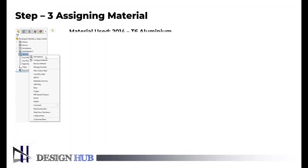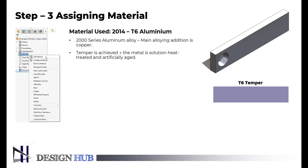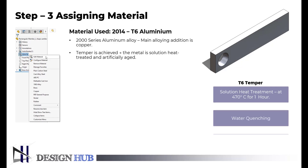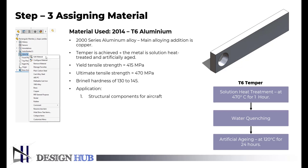The second material used is 2014 T6 aluminum for the rectangular member. 2014 aluminum is a 2000 series aluminum alloy; the main alloying addition is copper. 2014 T6 aluminum is 2014 aluminum in the T6 temper. To achieve this temper, the metal is solution heat treated and artificially aged until it meets standard mechanical property requirements. The T6 temper includes solution treatment for one hour at 470 degrees Celsius, water quenching, and then artificial aging for 24 hours at 120 degrees Celsius. This material has a yield tensile strength of 415 MPa, an ultimate tensile strength of 470 MPa, and a Brinell hardness of 130 to 145. The typical applications are high-strength structural components for aircraft, military vehicles, bridges, weapons manufacture, and structural applications.